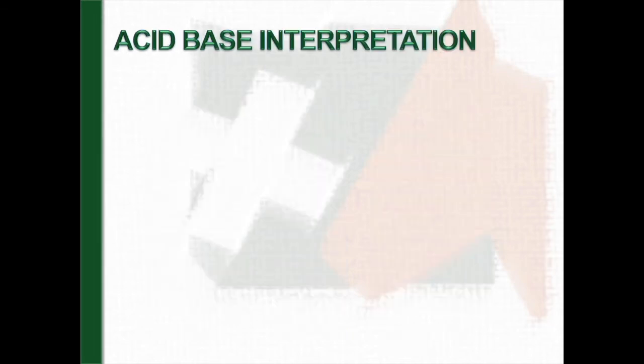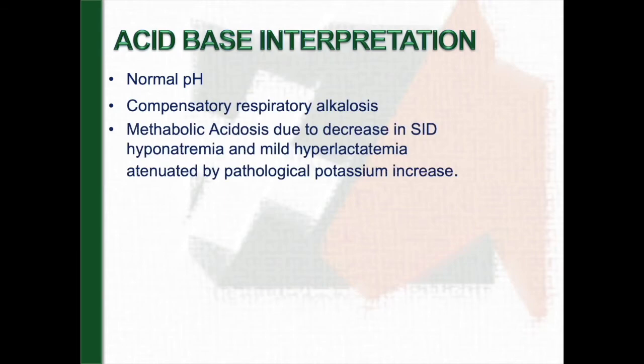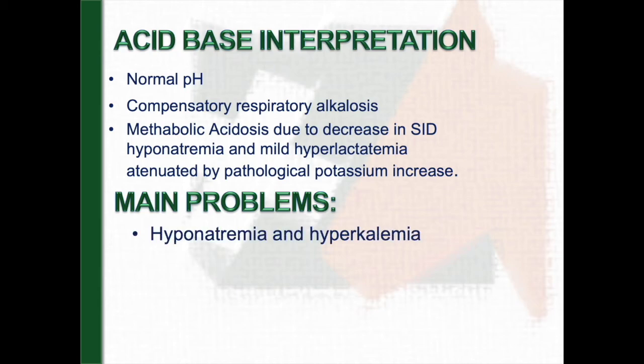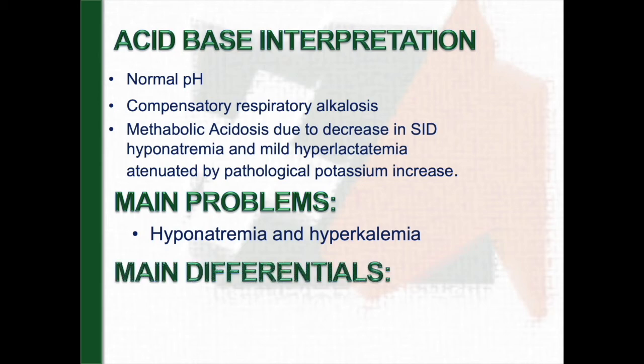In summary, the alterations of acid-base balance in Macarena are the following ones. We have a normal pH with a compensatory respiratory alkalosis and marked acidosis due to decrease in strong ion difference levels. This decrease is due to the hyponatremia and mild hyperlactatemia, but it is also masked by the increase in potassium levels. The main problems in this foal is this hyponatremia and this hyperkalemia.